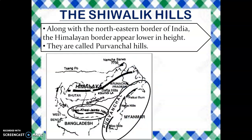Along the north-eastern border of India, the Himalayan border appears lower in height. Since they lie in the north-eastern area, they are called Purwanchal Hills. Since they are lower in height, these are known as hills and not mountains. A few of them visible on the map are Naga Hills, Mizo Hills, Patkai Bum, and Garo, Khasi, and Jaintia Hills.